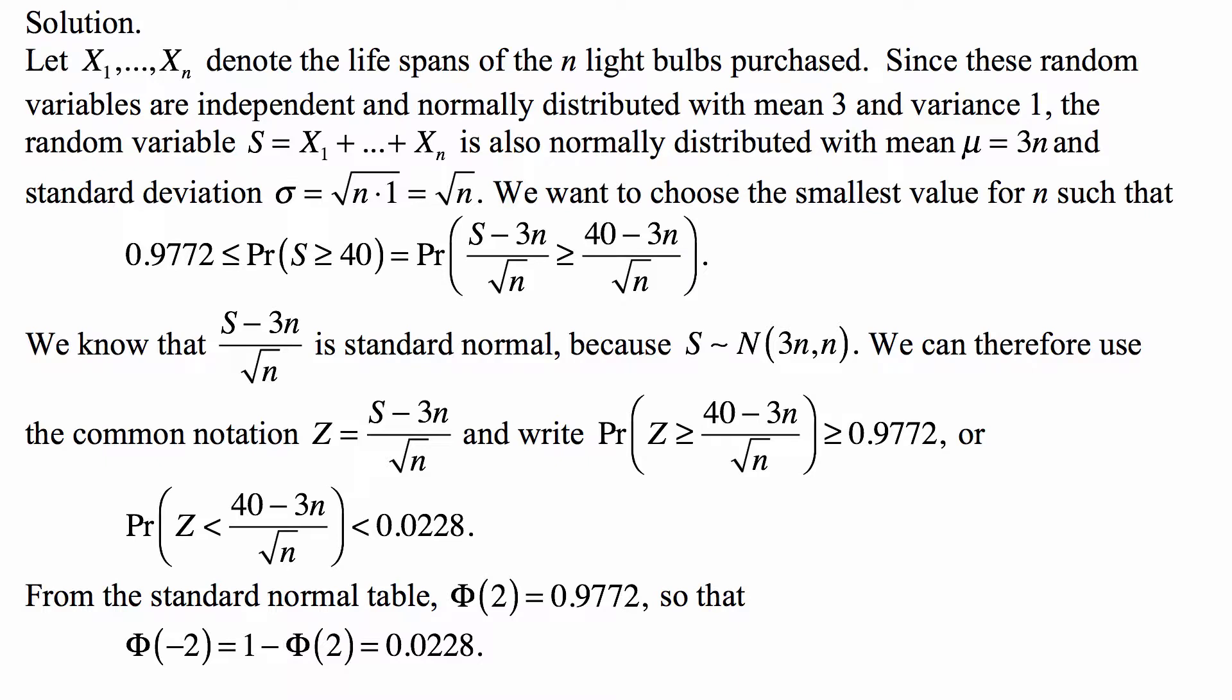And this random variable (S - 3n) / √n is the standardized version of a normal random variable, so it's standard normal. We can therefore use the common notation Z for it, Z standing for a standard normal random variable, and write that probability that Z is greater than or equal to (40 - 3n) / √n is greater than or equal to 0.9772.